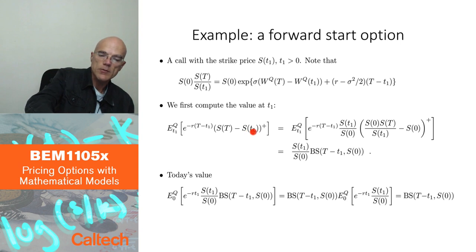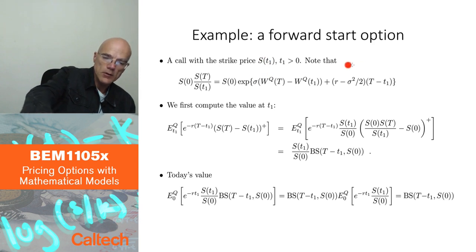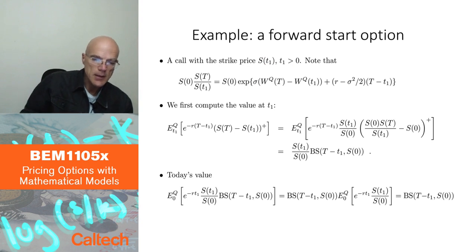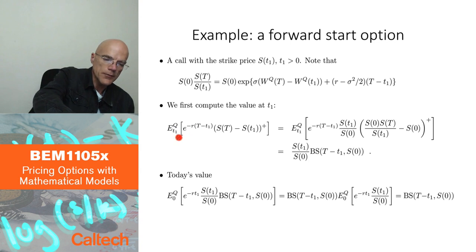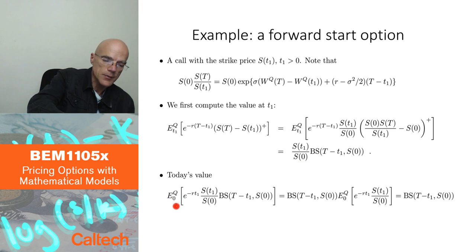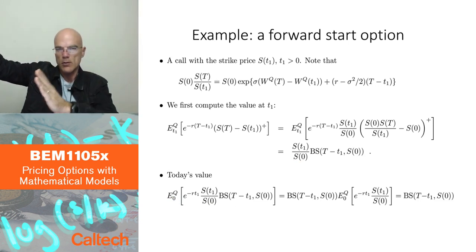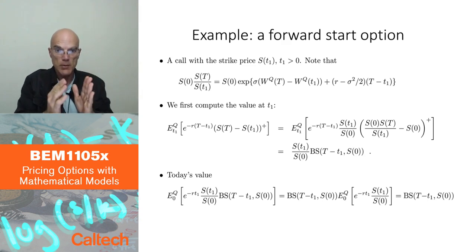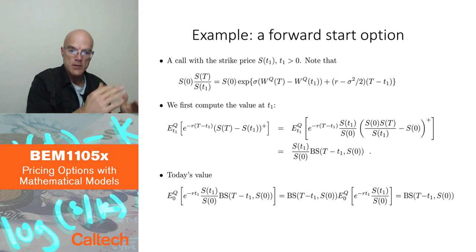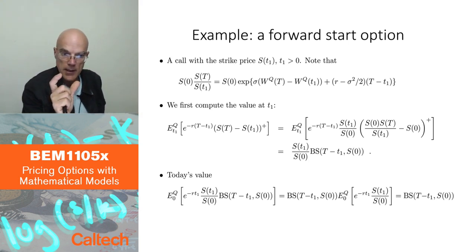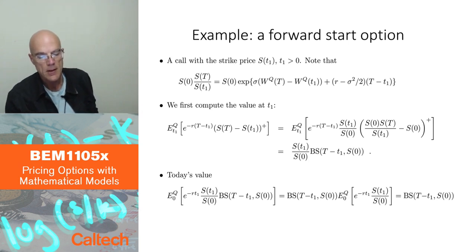The strike price is going to be the stock price itself at some future time T1, maybe three months from now, while capital T is maybe six months from now. So it's a call with the strike price set at T1. I will first compute the price at time T1, three months from now, and then price that value at time zero — the same logic as in the binomial tree, going to six months and then back through three months to compute the value today.